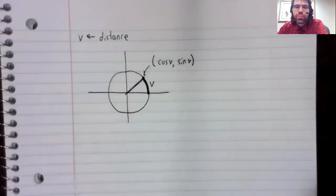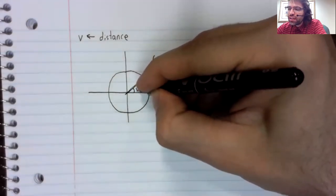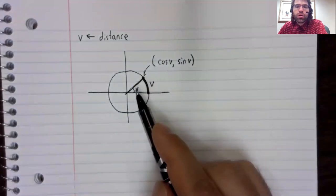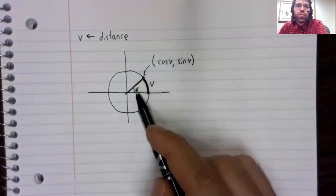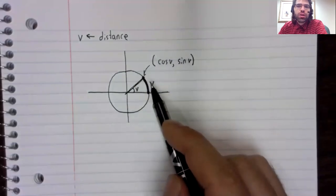So how can it be that we have two completely different definitions? Well, they're not completely different in point of fact, because if you remember, as long as we're measuring angles in radians, this arc length and this angle are the same.